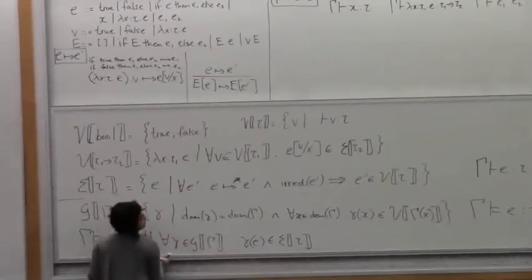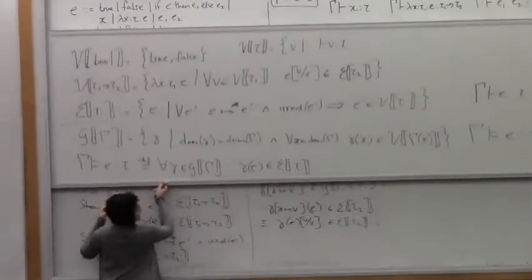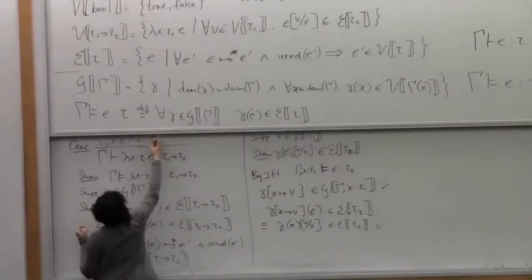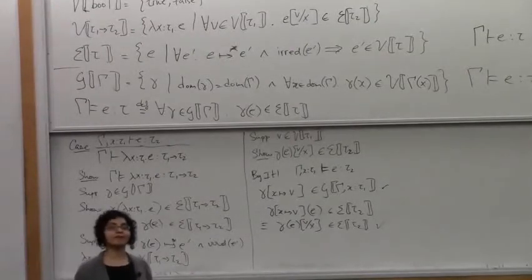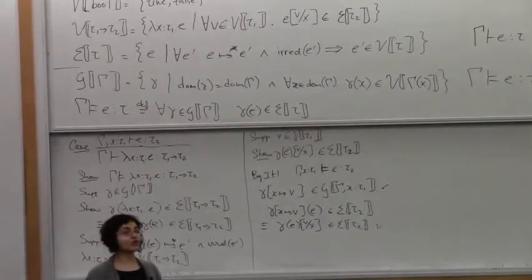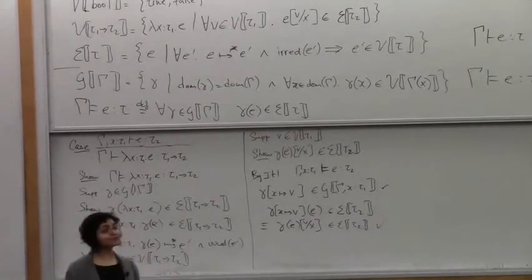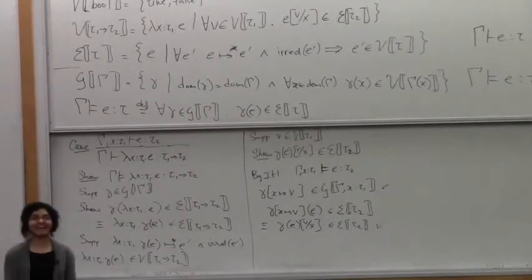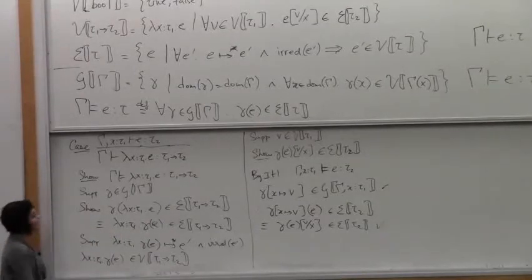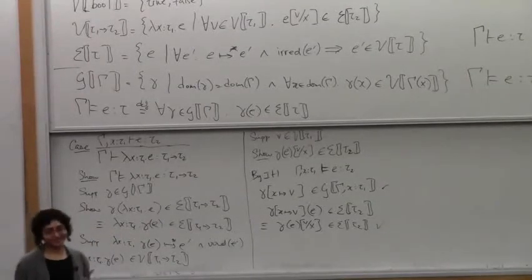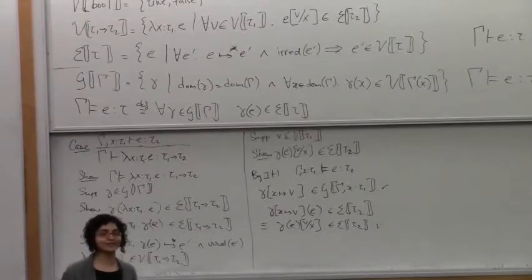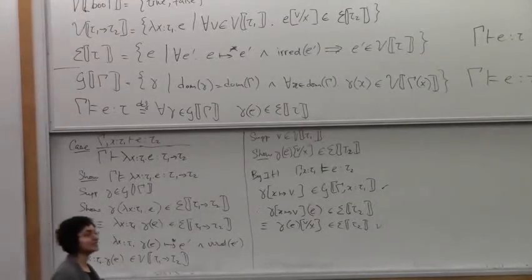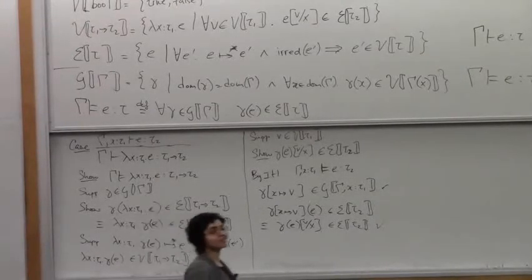So we've done the lambda case — this is actually the shorter case. The application case is a little bit longer. Homework for tonight: try it out at least, because you can't really understand logical relations properly unless you step through one or two proofs.